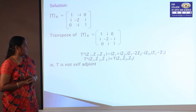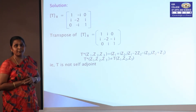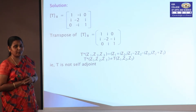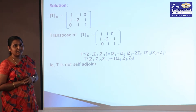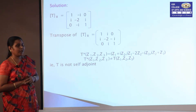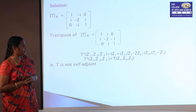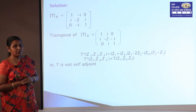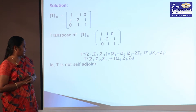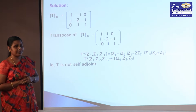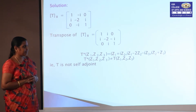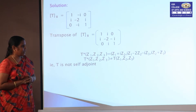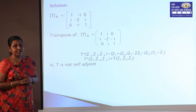In the solution, the operator is expressed in matrix form, where the first, second, and third columns represent z₁, z₂, and z₃ values respectively. Taking the transpose, rows and columns are interchanged. Computing T*, we get T*(z₁, z₂, z₃) = (z₁ + iz₂, iz₁ − 2z₂ − iz₃, iz₂ + z₃). Since this right-hand side is not equivalent to T(z₁, z₂, z₃), the given T is not a self-adjoint operator.